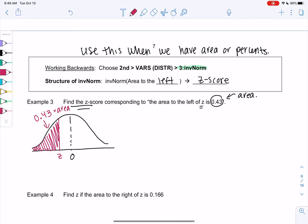So if I know area, I don't label the number line, because I don't know the number line. I know the area. So we'll go ahead and use this new function to find a z-score. Anytime we go backwards, we use the inverse. So z is inverse norm of 0.43.